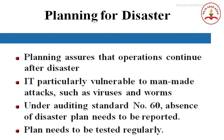In summary, an accounting information system is the collection of resources designed to transform data into information, communicated to a wide variety of decision makers. We use the term accounting information systems broadly to include transaction processing cycles, the use of information technology, and the development of information systems. The information system function is responsible for data processing; technologies such as electronic data interchange, barcode identification, scanning, point-of-sale terminals, just-in-time, computer-integrated manufacturing, and electronic funds transfer are all relevant to the quick response systems of information technology.